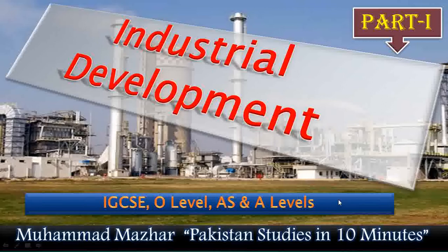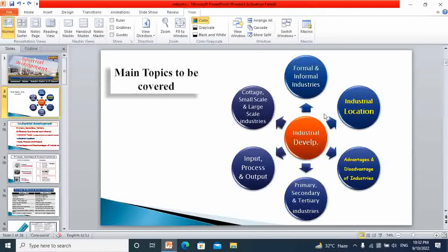For your better understanding, I have divided this chapter into subtopics, which we'll be covering in three videos. In this part one video, the following topics shall be covered: difference between formal and informal industries; definitions of cottage, small scale and large scale industries; input, process and output in large scale industries; differences among primary, secondary and tertiary industries; industrial location — very important for examination, as many skill-based questions come from this part — and advantages and disadvantages of large scale industries of Pakistan.